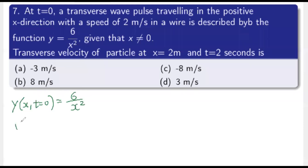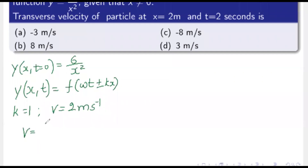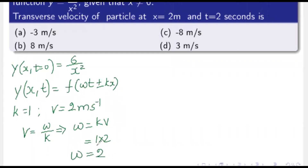The standard form of a progressive wave is y(x, t) = f(ωt ± kx). Comparing, the coefficient of x in the given function is 1, so propagation constant k = 1. Wave velocity v = 2 m/s. Since v = ω/k, omega ω = k·v = 1 × 2 = 2 radians per second.